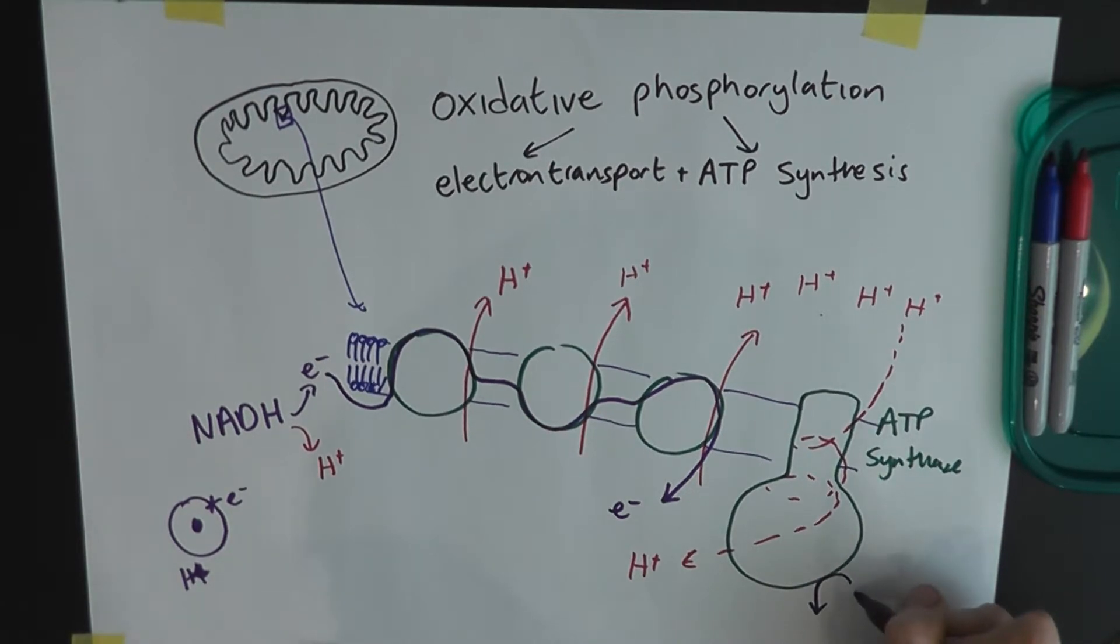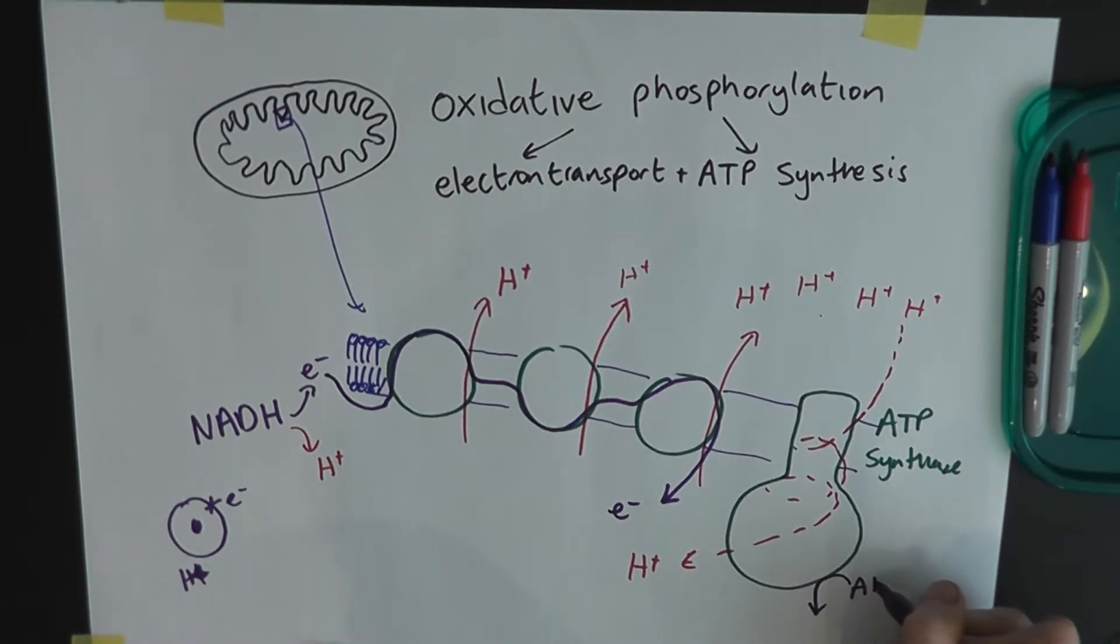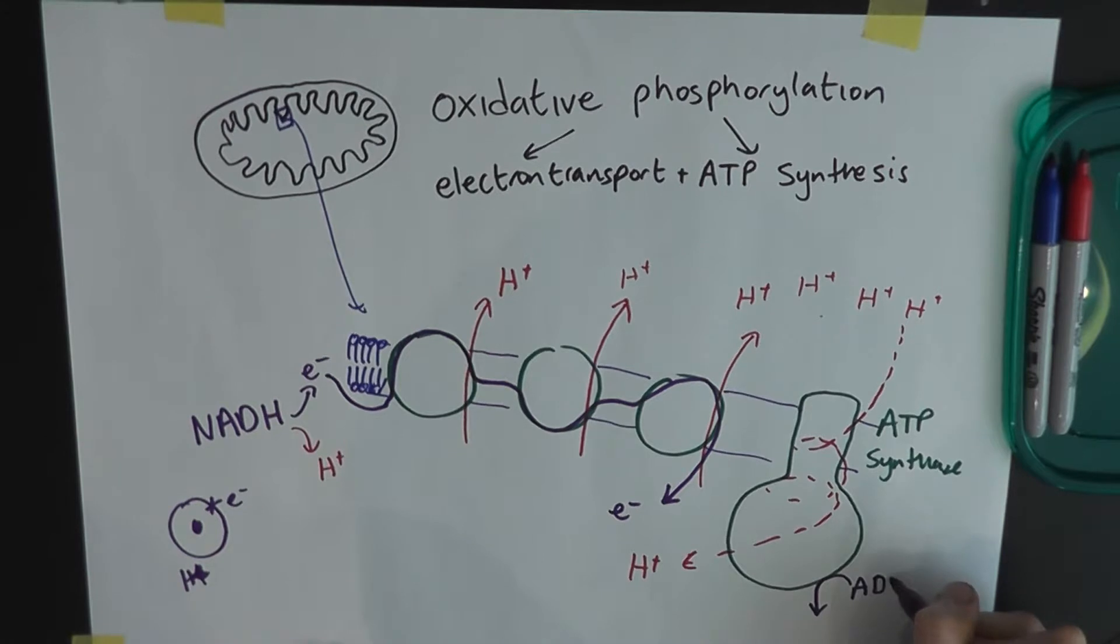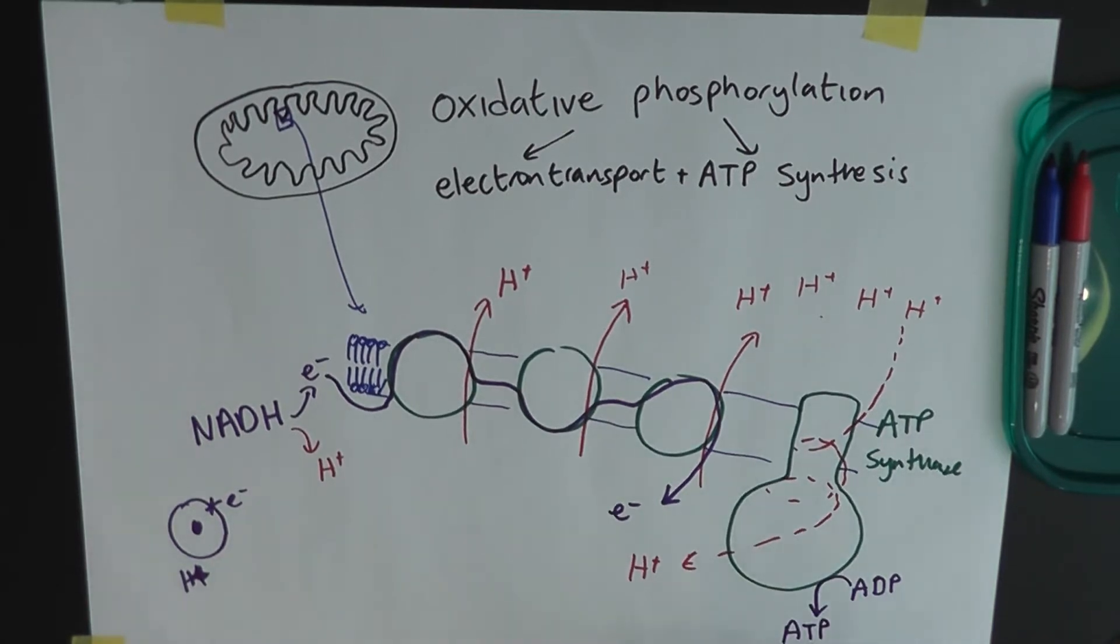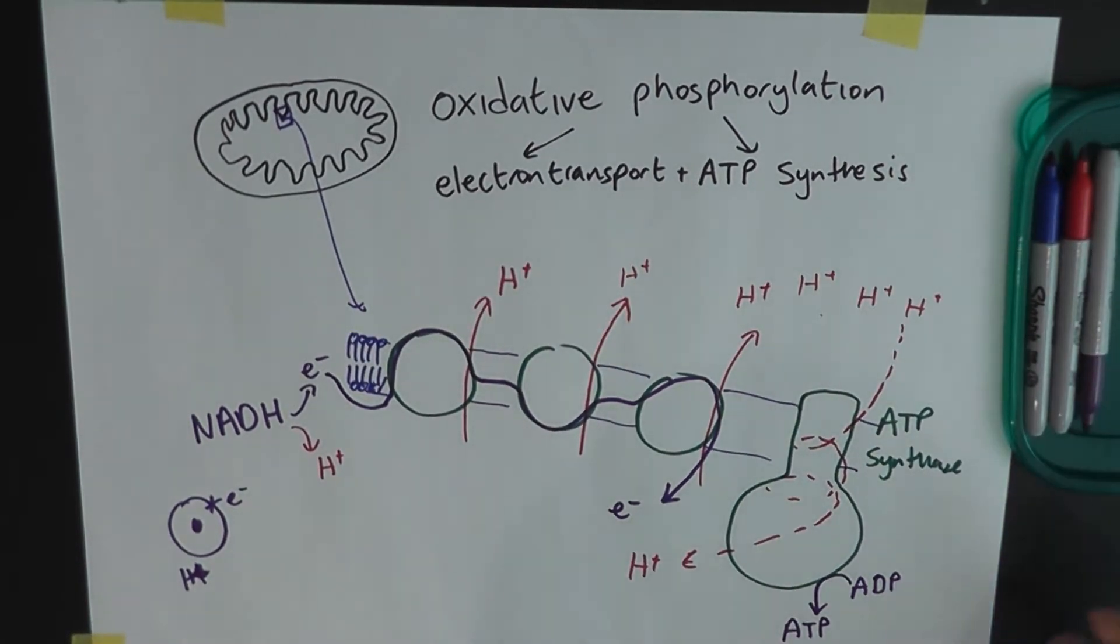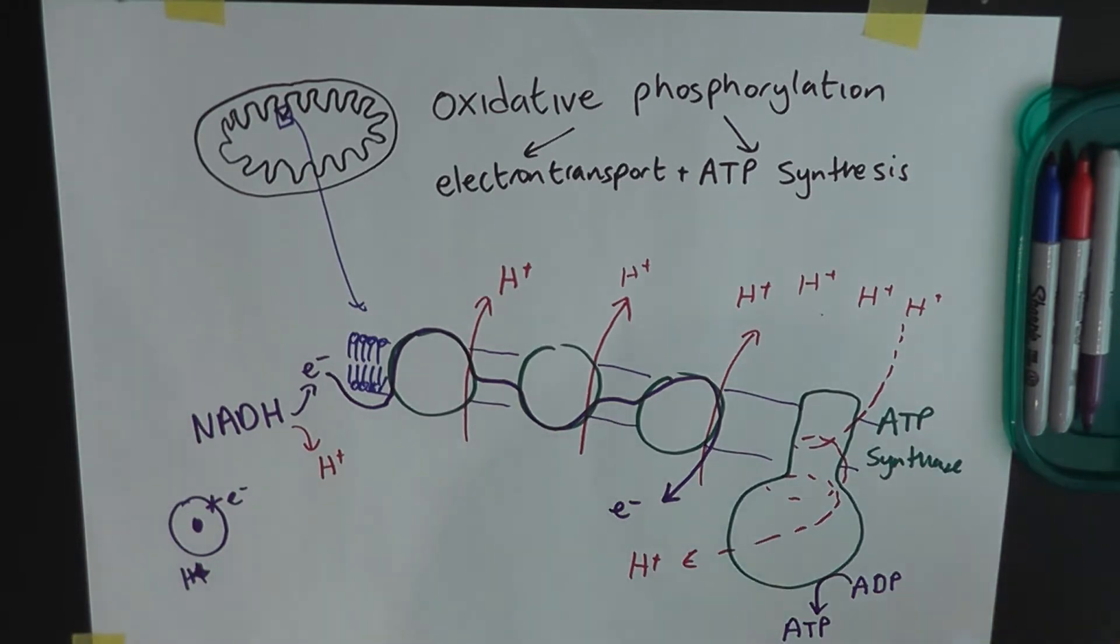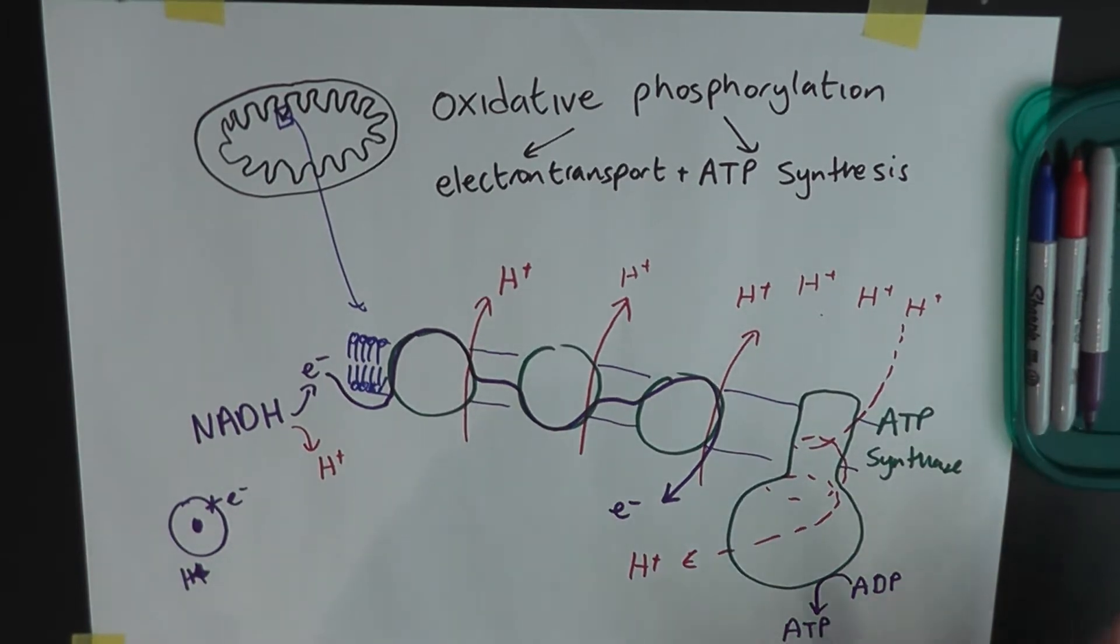And it does the most important job that it can do. And converts ADP, adenosine diphosphate, into adenosine triphosphate. And adenosine triphosphate is what we need for energy for muscle contraction, for membrane transport, and all the other things we use energy for. We use energy in the form of ATP. But we're not quite finished yet.